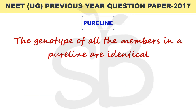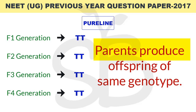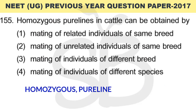The next term is pure line. A pure line means all members have the same genotype. For example, if the parent is TT, the offspring will also be TT — the same genotype across generations. Parents produce offspring of the same genotype. So, in cattle, to create pure lines, you need to maintain the same genotype in the homozygous condition — that is, TT or tt.